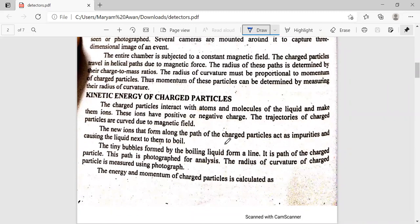The charged particles interact directly with the molecules of the liquid and create ions. These ions have positive and negative charges. Their trajectories are curved due to the magnetic field. The new ions that form along the path of the charged particles act as impurities and cause the liquid next to them to boil. The liquid starts to boil.